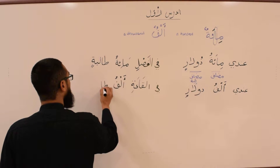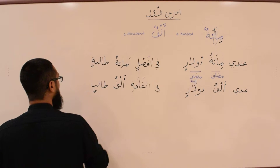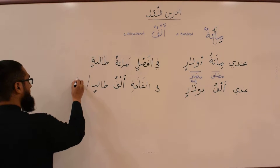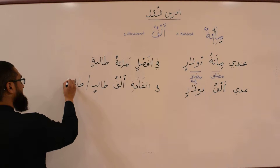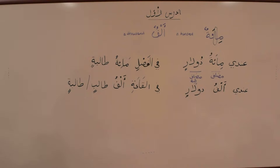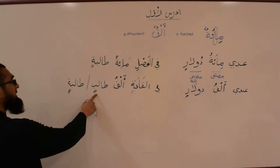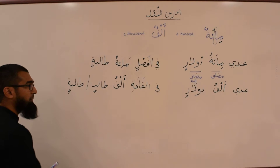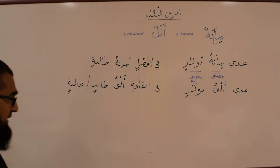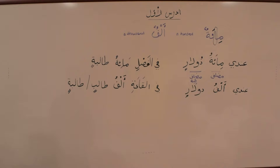In a hall — Fi'il Qa'ah — you can say Alfu Talibin or Alfu Talibatin. What if it's mixed — males and females? The masculine form Talibin is used because of the rule of Tagliib — Al-Tagliib. We'll see more examples of that insha'Allah.